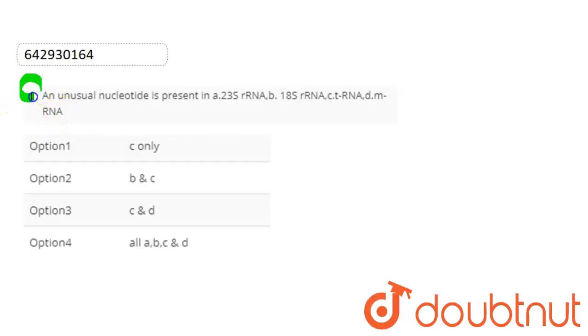Hello students, let's start the question. Question here is, an unusual nucleotide is present in 23S ribosomal RNA, 18S ribosomal RNA, and mRNA.